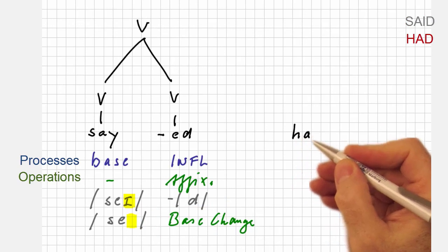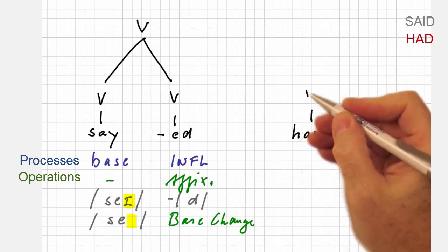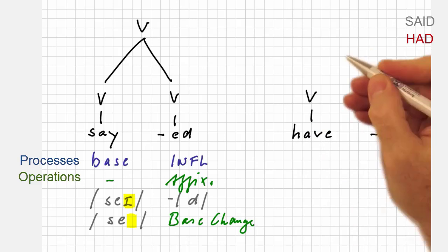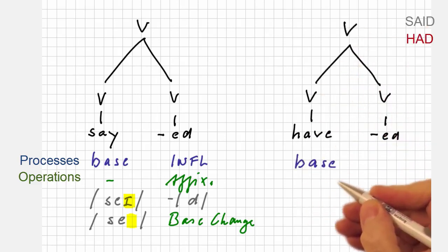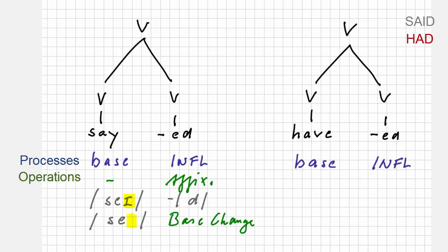Had is a similar case. The base form is have, which is a verb, to which the verbal affix -ed is added. Again, a base form plus a process of inflection, and the operation involved is affixation.